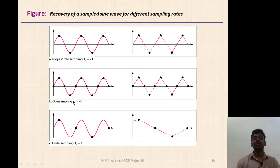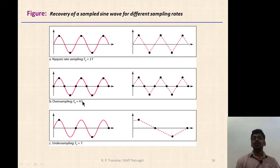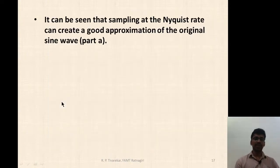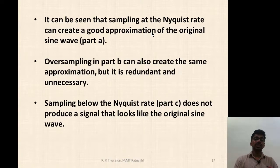With f_s = 4f, which is much higher than the required rate, the generated intermediate samples cannot give any additional information — both graphs are almost the same. So f_s = 4f is called oversampling, which is not so useful. Sampling at the Nyquist rate can create a good approximation of the original sine wave. Oversampling creates the same approximation but is redundant and unnecessary. Sampling below the Nyquist rate does not produce a signal that looks like the original sine wave.